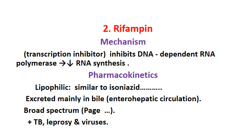The second first-line anti-tuberculous drug is rifampicin (also called rifampine). Its mechanism is transcription inhibition — it inhibits DNA-dependent RNA polymerase, thereby inhibiting the formation of messenger RNA from DNA. Since mRNA determines formation of all other cell constituents, this causes severe cell damage. Rifampicin is tuberculocidal and bactericidal.